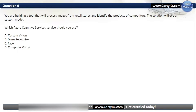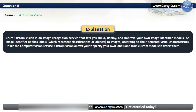Question 9. You are building a tool that will process images from retail stores and identify the products of competitors. The solution will use a custom model. Which Azure Cognitive Services service should you use? Options: A. Custom Vision, B. Form Recognizer, C. Face, or D. Computer Vision. The correct answer is A. Custom Vision. Azure Custom Vision is an image recognition service that lets you build, deploy, and improve your own image identifier models. Unlike the Computer Vision service, Custom Vision allows you to specify your own labels and train custom models to detect them.